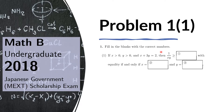Problem 1 of 1. If x is greater than 0, y greater than 0, and x plus 3y equals 2, then 1 over xy is greater than or equal to blank. With equality if and only if x equals blank and y equals blank.